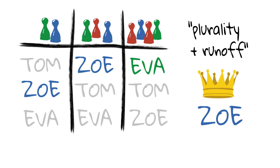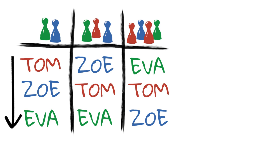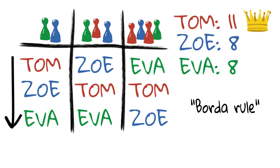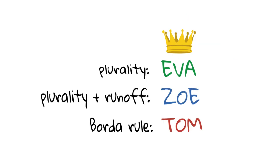One of the members is still not convinced. To find the best compromise, we have to rank the candidates according to our preferences, he argues. The members agree. Knowing everybody's full preference ranking, they now assign points to each rank. This so-called Borda voting rule yields this result. Now Tom is the winner. The members are puzzled — with three different, well-established voting rules, they obtain three different outcomes. Which one should they choose?